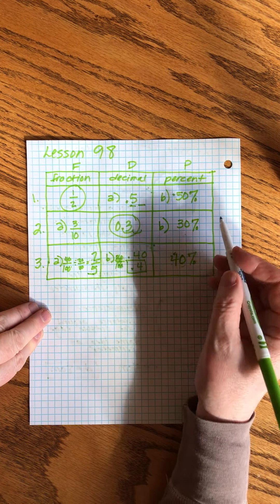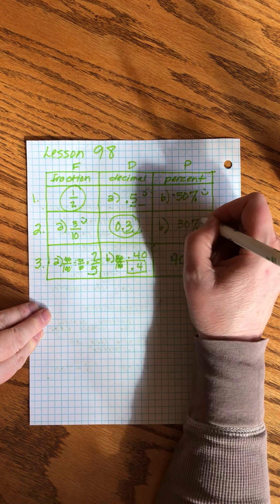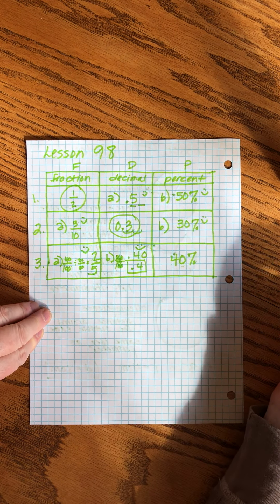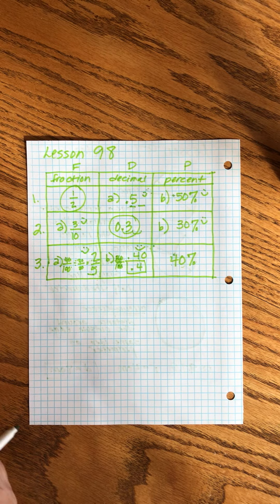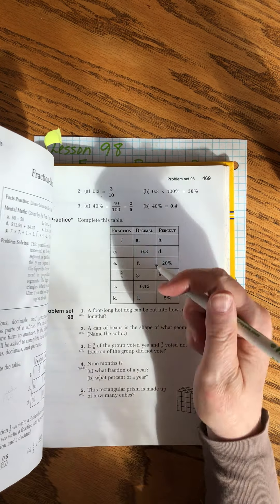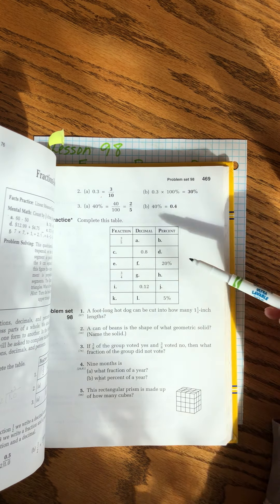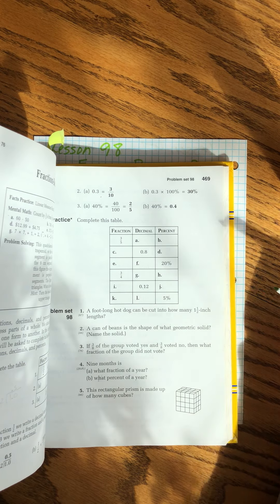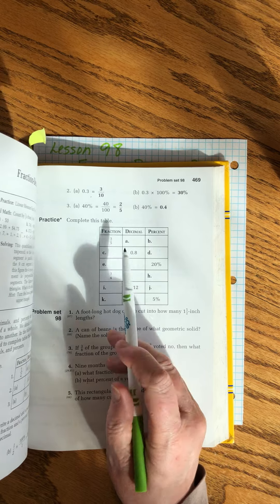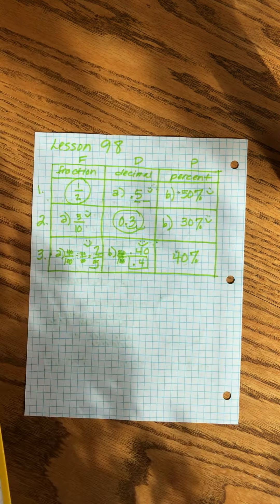There are my four answers, every one of them is right. If you were doing this in your homework like for this practice, you don't have to copy the chart. All you have to do is figure out, just make a list of A through L and then each one.